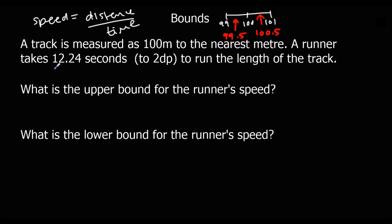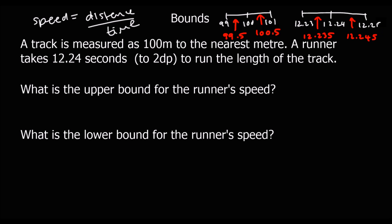For the time, 12.24 seconds: the next one up is 12.25 and the next one down is 12.23, giving a lower bound of 12.235 and an upper bound of 12.245. For the upper bound of speed, we want the biggest distance — 100.5 — divided by the smallest time — 12.235 — because dividing by a smaller number gives a bigger answer.